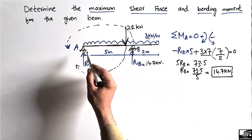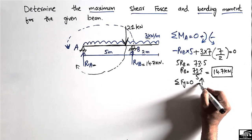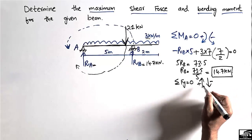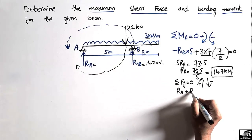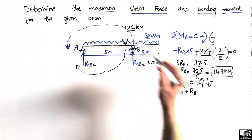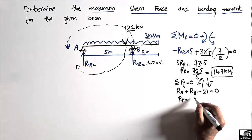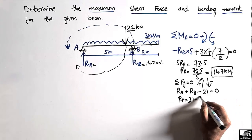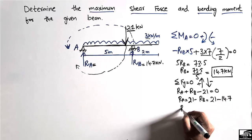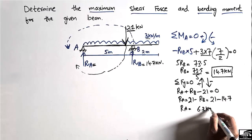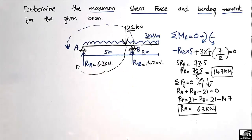To find RA, we use the summation of vertical forces equal to zero. Upward forces RA and RB are positive; the downward force of 21 kN is negative. So RA + RB − 21 = 0, which gives RA = 21 − RB = 21 − 14.7 = 6.3 kN. This is the support reaction at A.